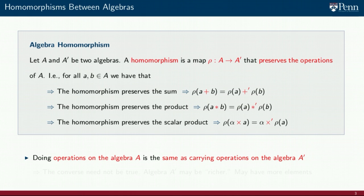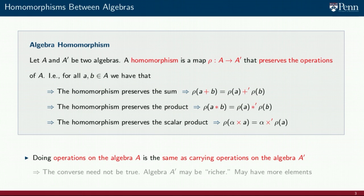It is also useful if you are given an algebra A and you want to process signals in a vector space M. Do notice that the converse need not be true — operations in A and A prime are not equivalent. We can move from A to A prime, but it is not necessarily true that operations in A prime can be mapped to operations in A. This could happen because A prime has more elements than A.